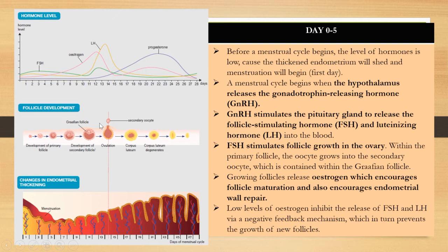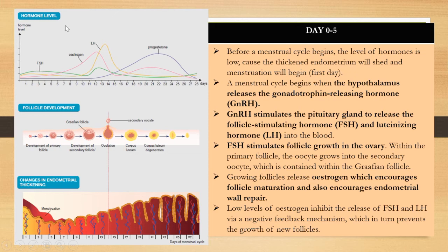Now we will discuss what happens during the menstrual cycle, divided into four phases. The first phase is Day 0 to Day 5. The menstrual cycle begins when menstruation occurs on the first day — the bleeding on day one marks the start of the cycle. We will look at the graph of hormone levels across the 28-day cycle.